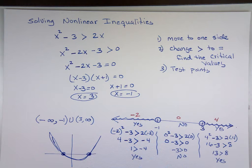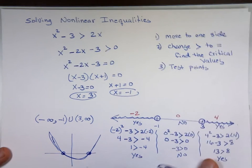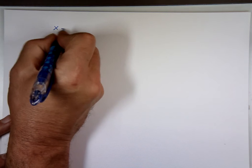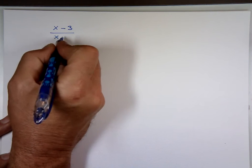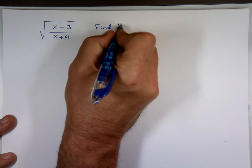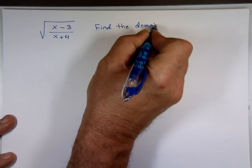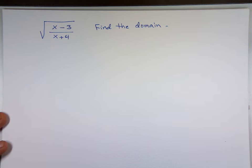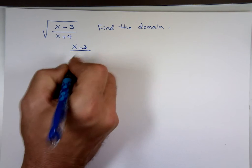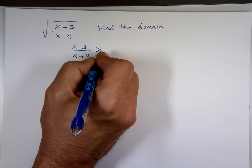What if it's not a quadratic equation but still non-linear? For example, finding the domain of a function involving a square root of a rational expression. When you have a square root, you need what's inside the square root to be greater than or equal to zero. So we need (x - 3)/(x + 4) ≥ 0.